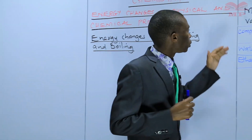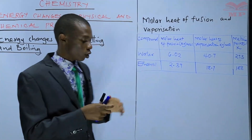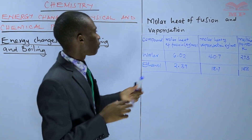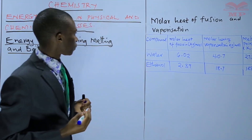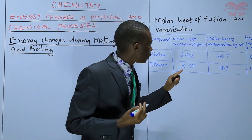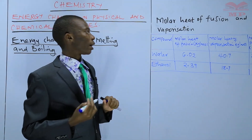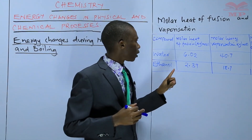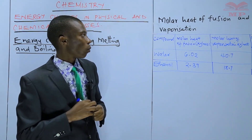With me I have two examples showing the molar heat of fusion and vaporization. We have the compound, the molar heat of fusion measured in kilojoules per mole, and the molar heat of vaporization also in kilojoules per mole. The first compound is water: molar heat of fusion is 6.02, molar heat of vaporization is 40.7 kilojoules per mole, and the melting point is 273 Kelvin. For ethanol: molar heat of fusion is 2.39, molar heat of vaporization is 18.7 kilojoules per mole, and the melting point is 188 Kelvin.